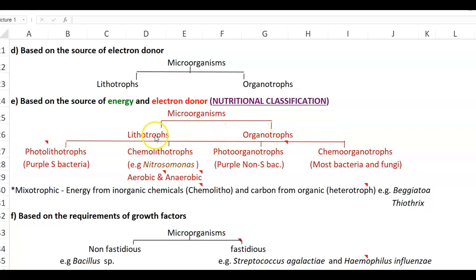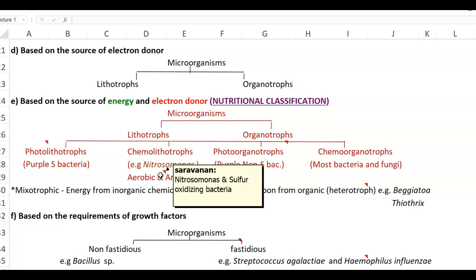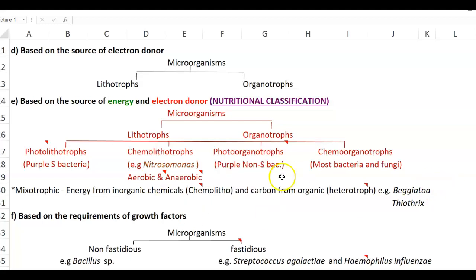Microorganisms are classified into lithotrophs and organotrophs based on carbon requirement, further dividing into photolithotrophs and chemolithotrophs. The classical example for photolithotrophs is purple sulfur bacteria, and for chemolithotrophs it is Nitrosomonas. Aerobic chemolithotrophic organisms include Nitrosomonas and sulfur-oxidizing bacteria.